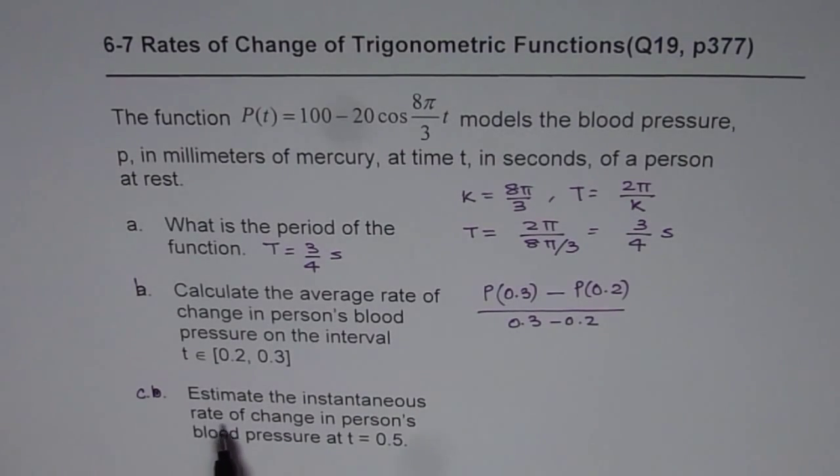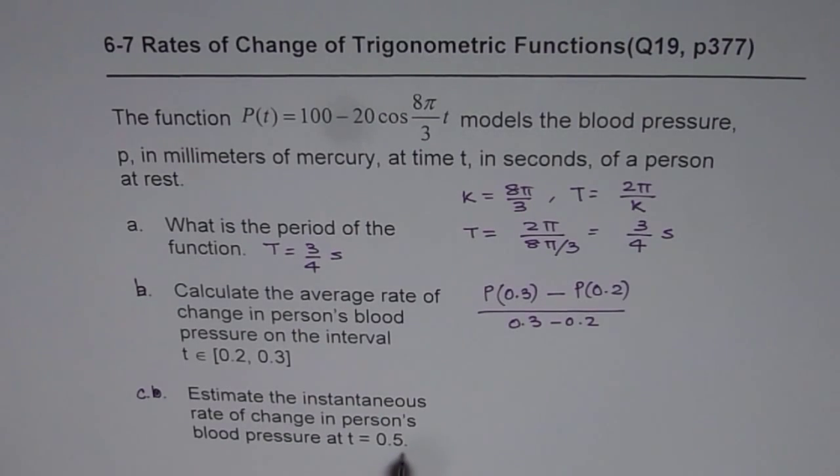Part C is estimate the instantaneous rate of change in person's blood pressure at T equals 0.5. Now for such a question, you can use centered value.